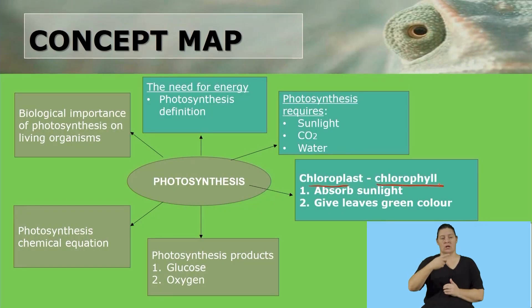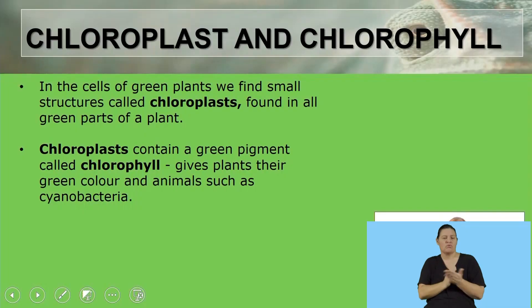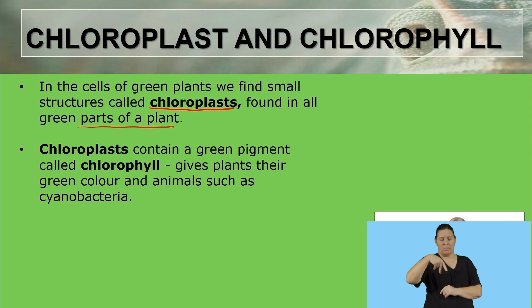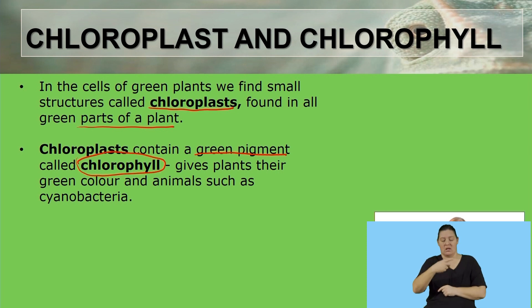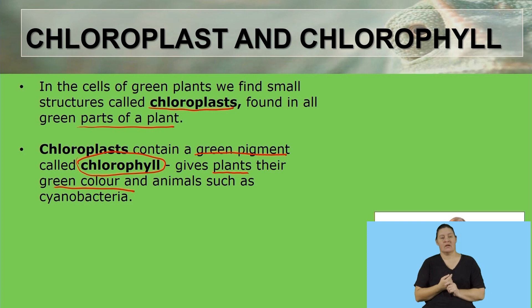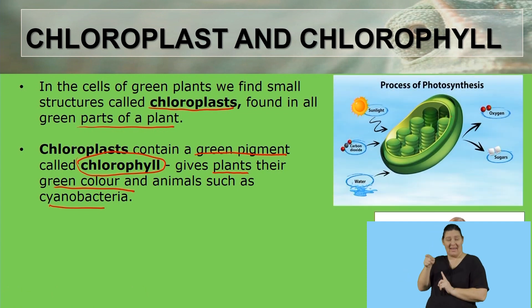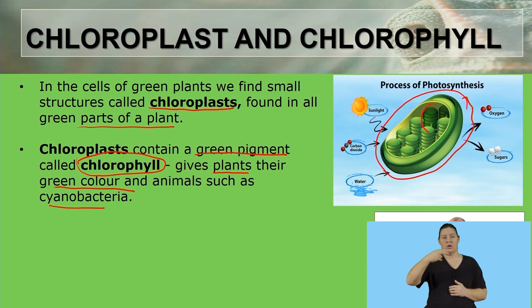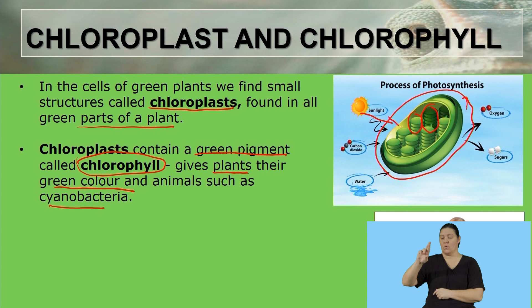Now we are going to move on to the next part of the lesson, which is the chloroplast and chlorophyll. This is going to give us more detail as to how these things are used in making food during photosynthesis. In the cells of green plants, we find small structures which are called chloroplasts. They are found in the green parts of the plant. The chloroplast contains a green pigment which is called chlorophyll. The chlorophyll is responsible for giving plants their green colour, and also organisms such as the cyanobacteria. As you can see in the picture alongside, this is how a chloroplast looks like, and these structures inside are what we call the chlorophyll.